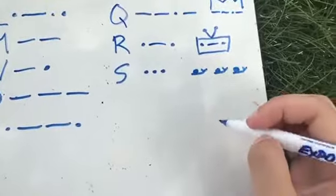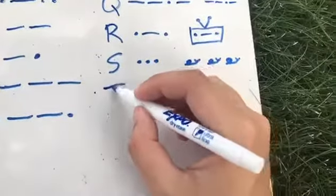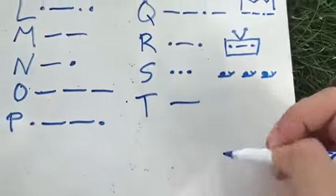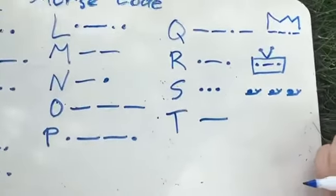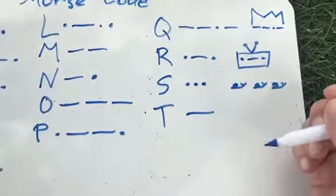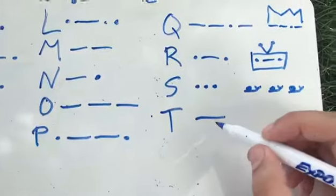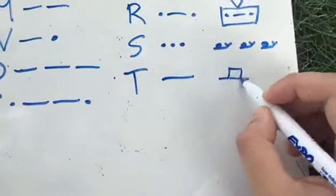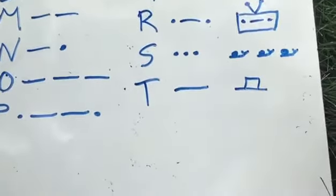Next we have T, and this one's pretty simple, just like E, but opposite, it's just one dash, and I like to remember this because it is like a top hat, just added little lines up there.